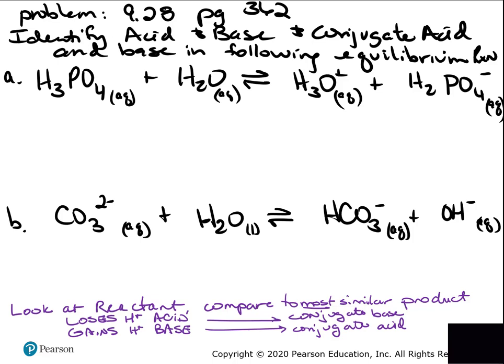When reviewing, I put a short note at the bottom: always look at the reactants, look at the products, and find one reactant. Pick a reactant — it doesn't matter which one — find the most similar product on the opposite side. The one that loses its hydrogen ion is an acid, and on the product side its pair is the conjugate base. The one that gains a hydrogen ion is a base, and its product pair is the conjugate acid.